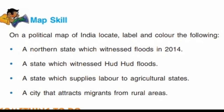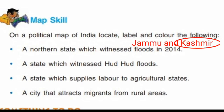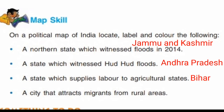Next, map skills — there are four questions on a political map of India. First, locate the northern state that witnessed floods in 2014: Jammu and Kashmir, now a union territory. Second, the state that witnessed floods: Andhra Pradesh. Third, a state which supplies labor to agricultural states: Bihar. Fourth, the city that attracts migrants from rural areas — you may write Delhi or other cities.